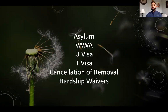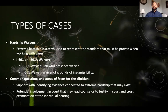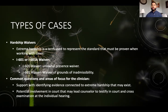Here are the common ones: asylum, VAWA, U-Visa, T-Visa, cancellation of removal, and hardship waivers. I don't want you to get overwhelmed — I'm going to go over a few of these so you're able to acknowledge how to engage in them and provide them within your practice, because you don't need to know every single one. Where I'm at in North Carolina, the majority of cases I do are hardship cases, U-Visa cases, and VAWA. I've got colleagues in New York or Texas where they may be doing more asylum cases. It really depends on where you're at and the type of training you need.